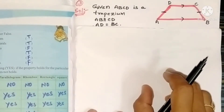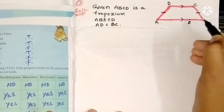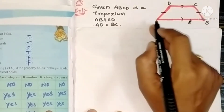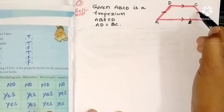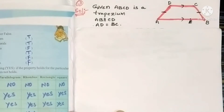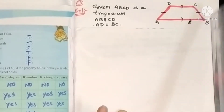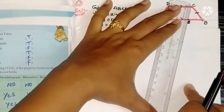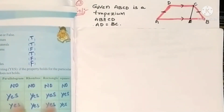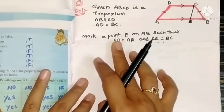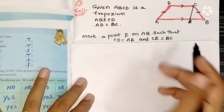To prove angle A equals angle B and angle C equals angle D, mark a point E on AB such that AE equals CD and CE equals BC. We construct this line to solve the problem. So write: mark a point E on AB such that CD equals AE and CE equals BC.